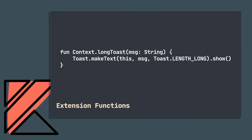Extension functions let us add functionality to existing types. Here's an example: we could create an extension function called longToast on the Context type. Instead of having to call Toast.makeText, pass in a context and a message and LENGTH_LONG every time, we create this helper function called longToast and invoke it by simply calling longToast on a Context and passing in the message. This is one way to restructure helper methods or helper classes to take advantage of Kotlin functions—great for massaging APIs you don't control and making them fit your workflow.